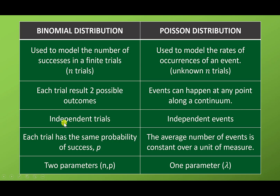For binomial, it has independent trials. For Poisson, it has independent events. For example, bacteria growth in one day is one event; growth in two days is another event. For binomial, each trial has the same probability of success, denoted P. For Poisson, the average number of events is constant over a unit of measure. For example, if an operator receives on average three calls per day, then for two days the operator will receive six calls.